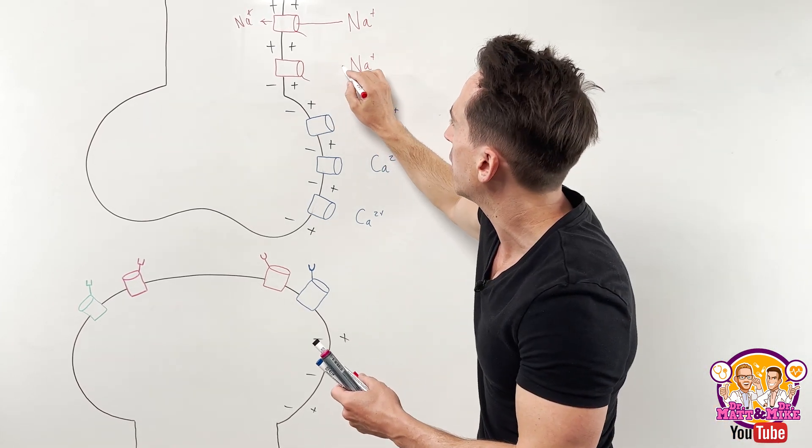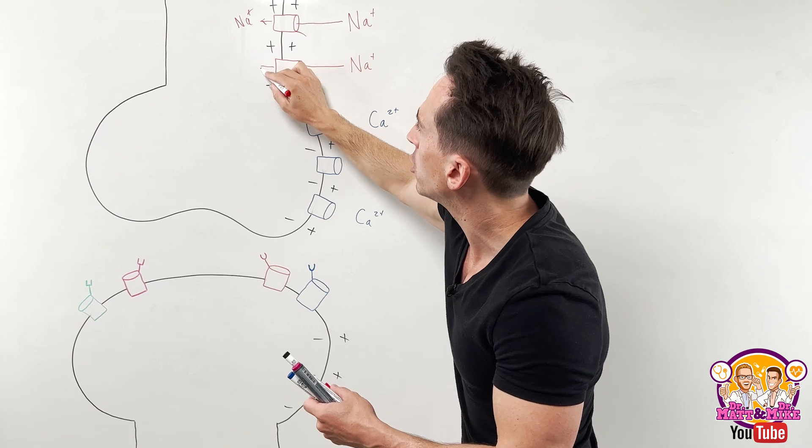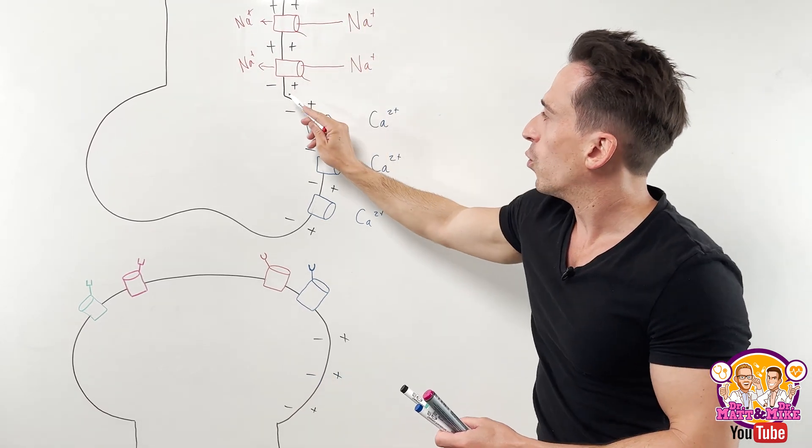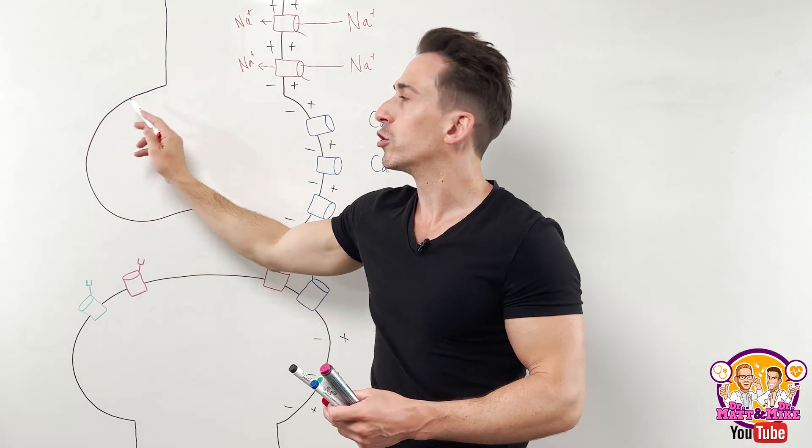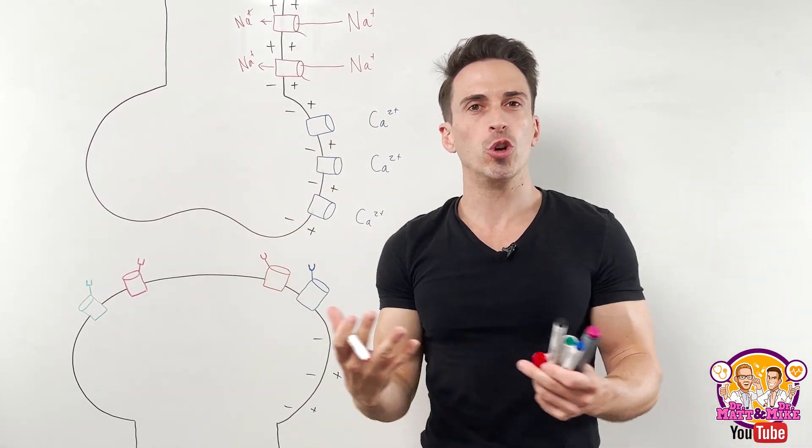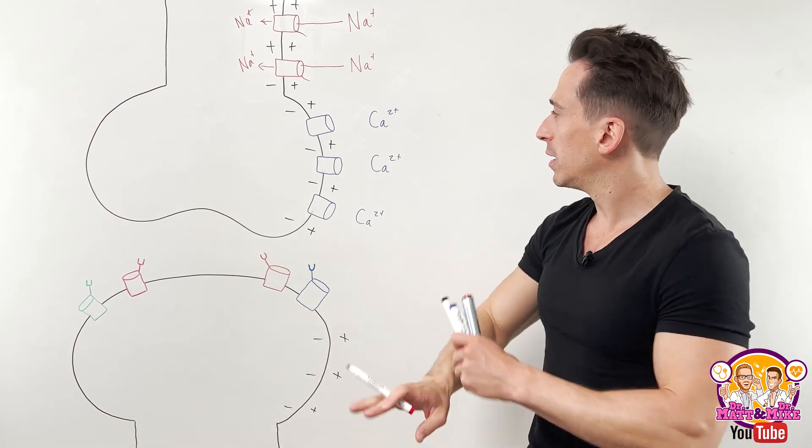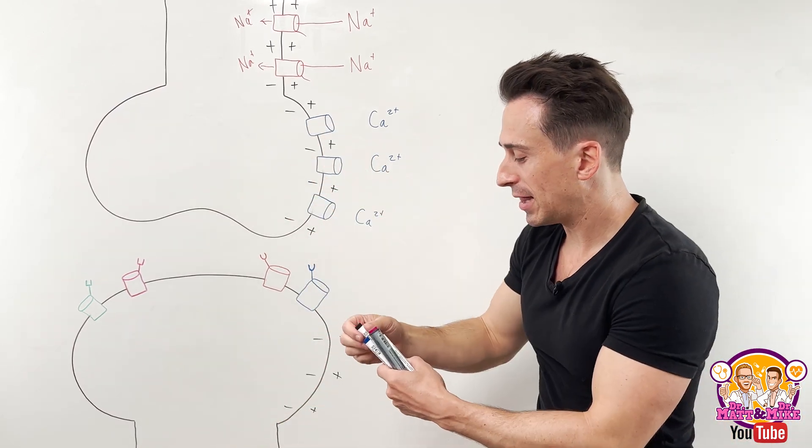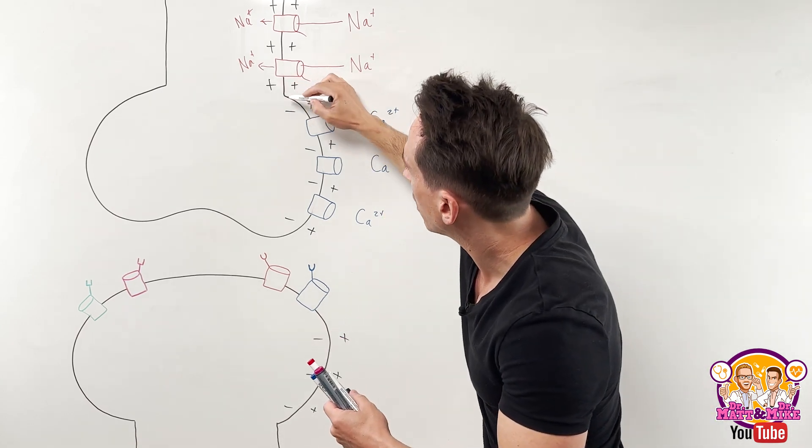And again, this is simply what an action potential is. This happens all the way down the neuron until we hit the point that we've hit now, which is we're now at the axon terminal or axon bulb or axon knob, whatever the terminal doesn't matter. We're right at the end basically.